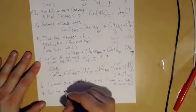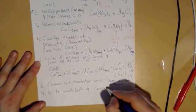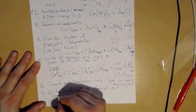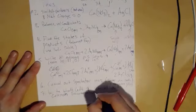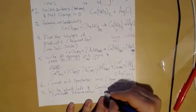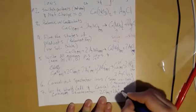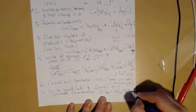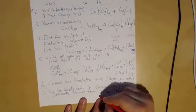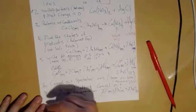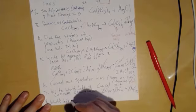Step seven, write what's left and cancel out common denominator. So in this case, what's left is 2 Cl- aqueous plus 2 Ag+ aqueous goes to 2 AgCl solid. And so in this example, there's a common denominator of two. So I'm going to divide that out. And then eight, what's left equals the net ionic.